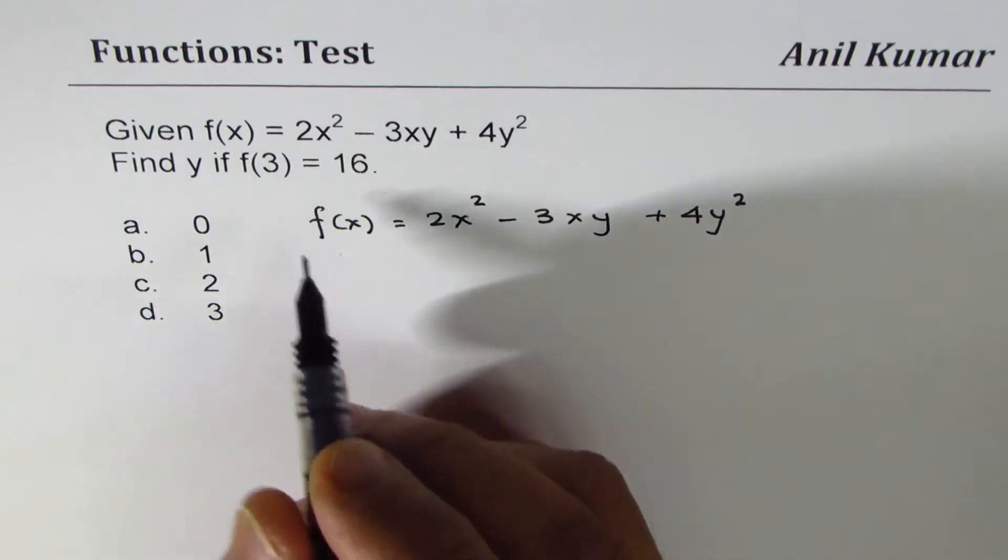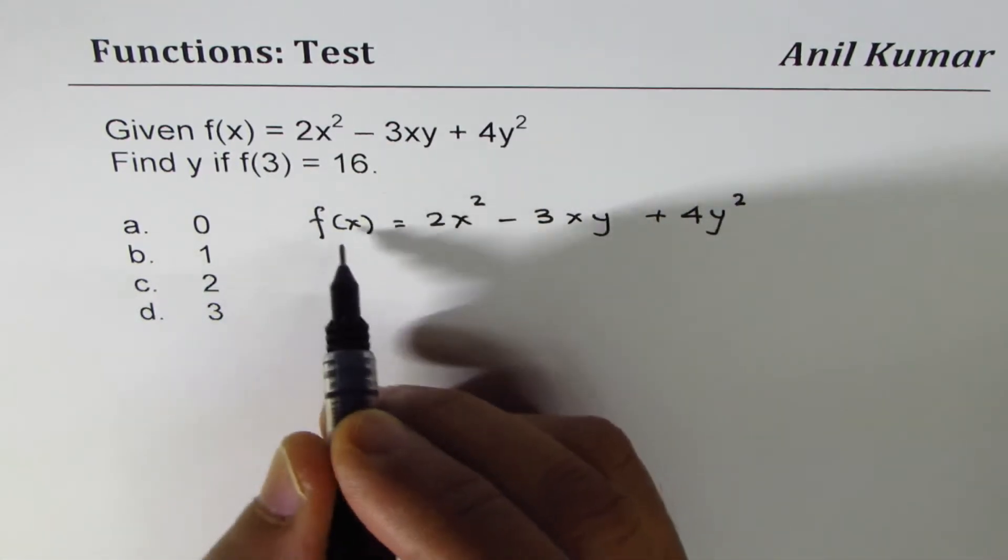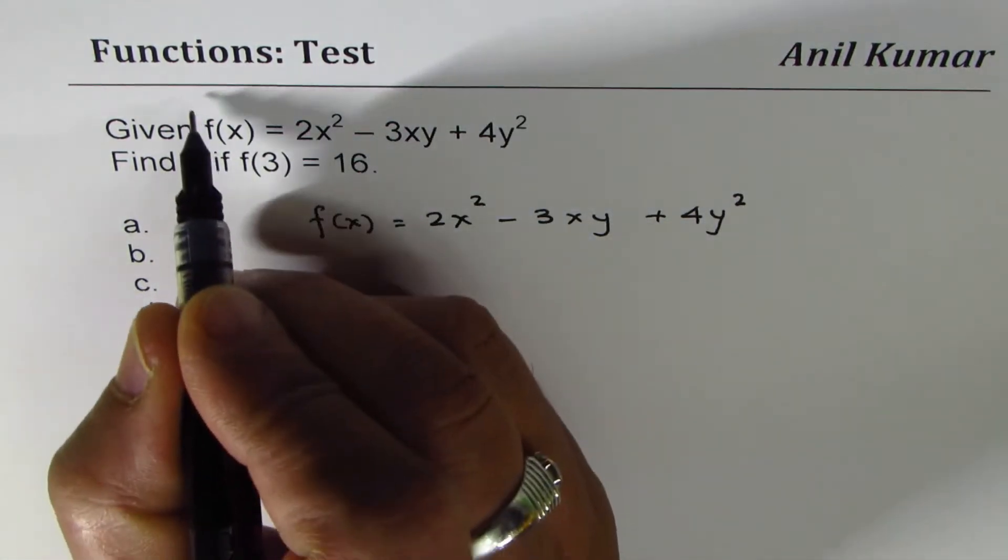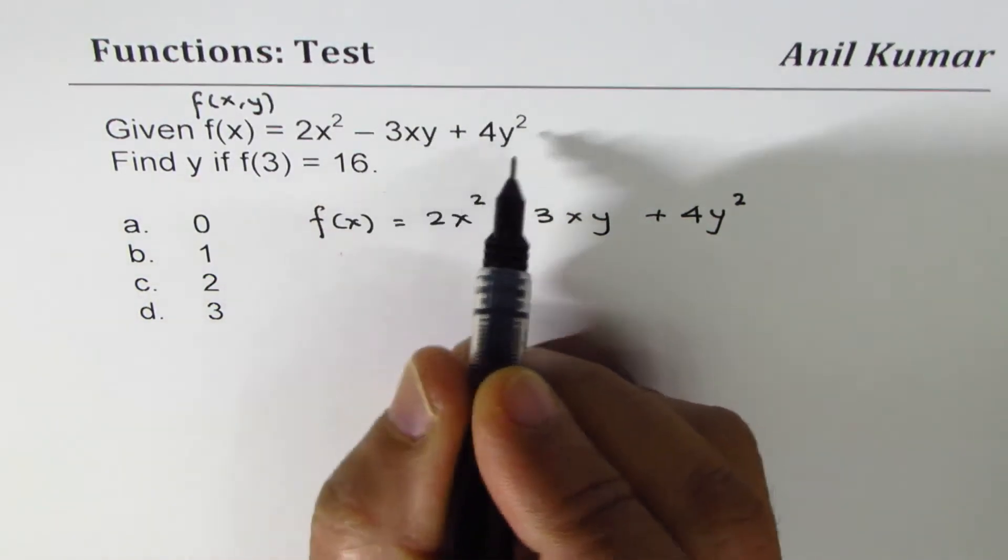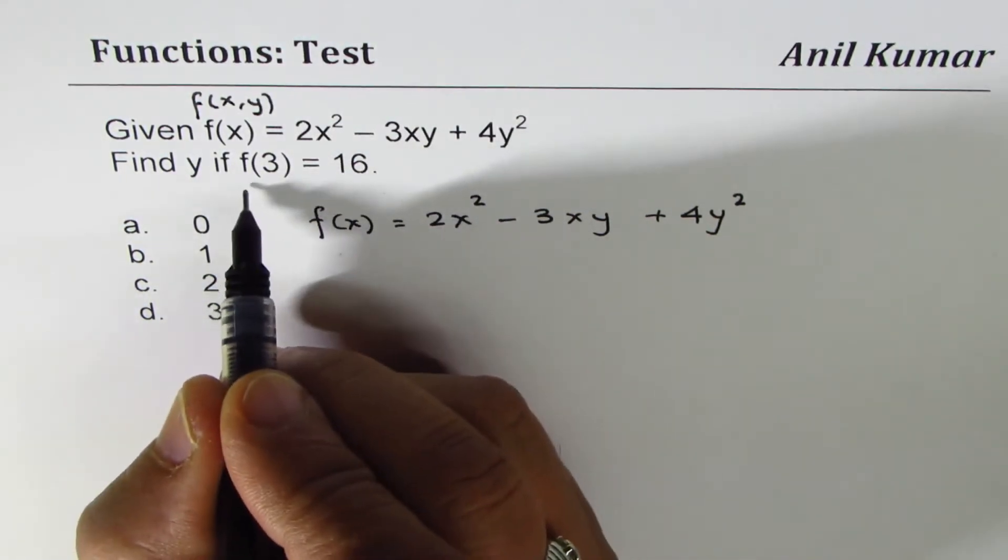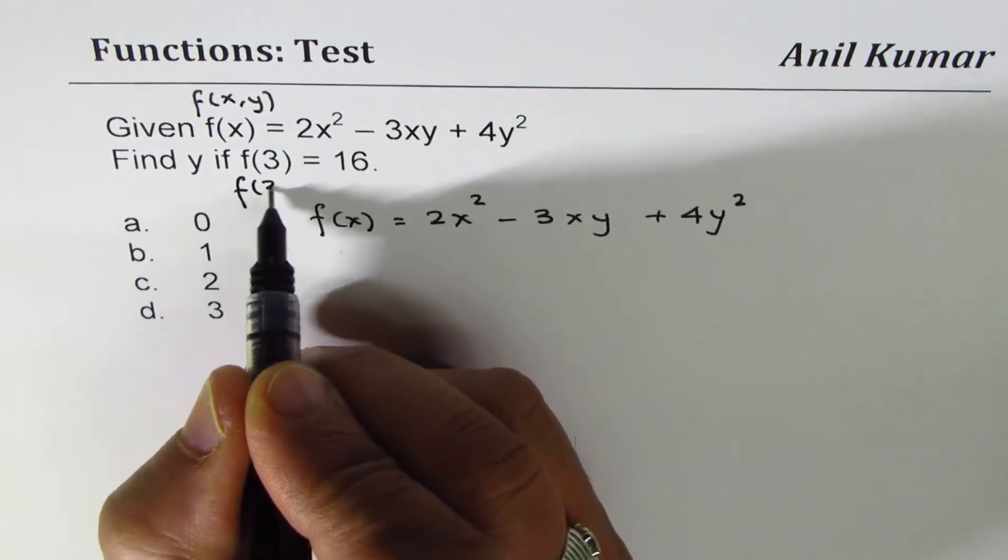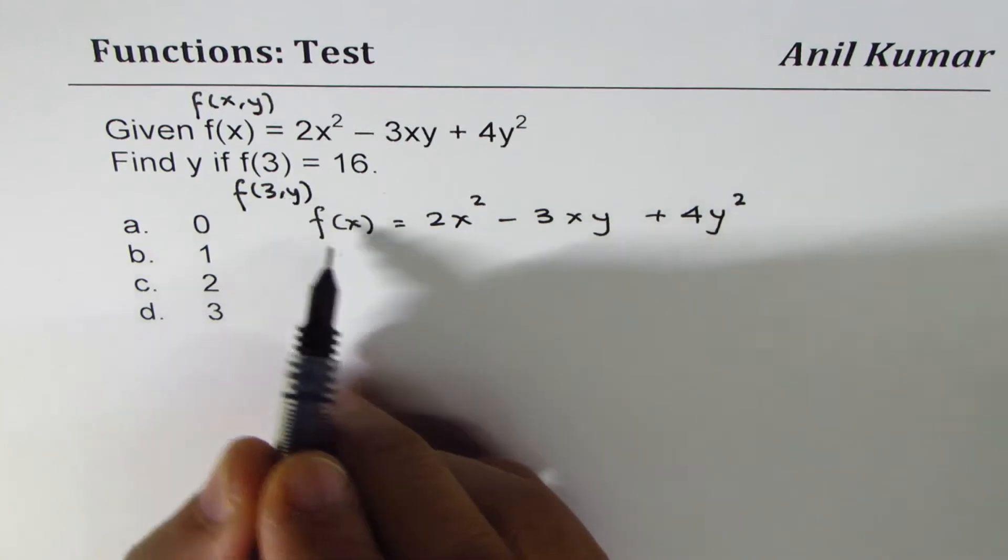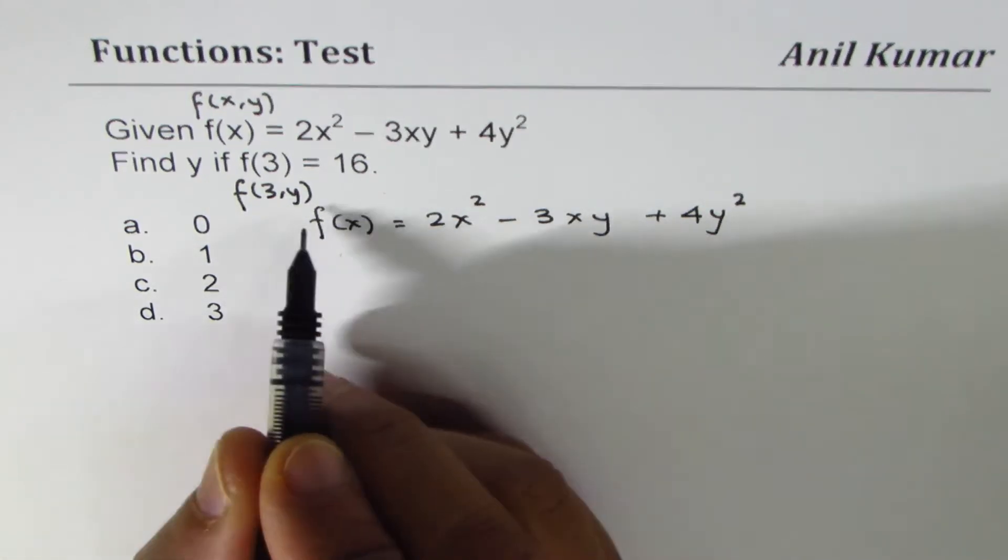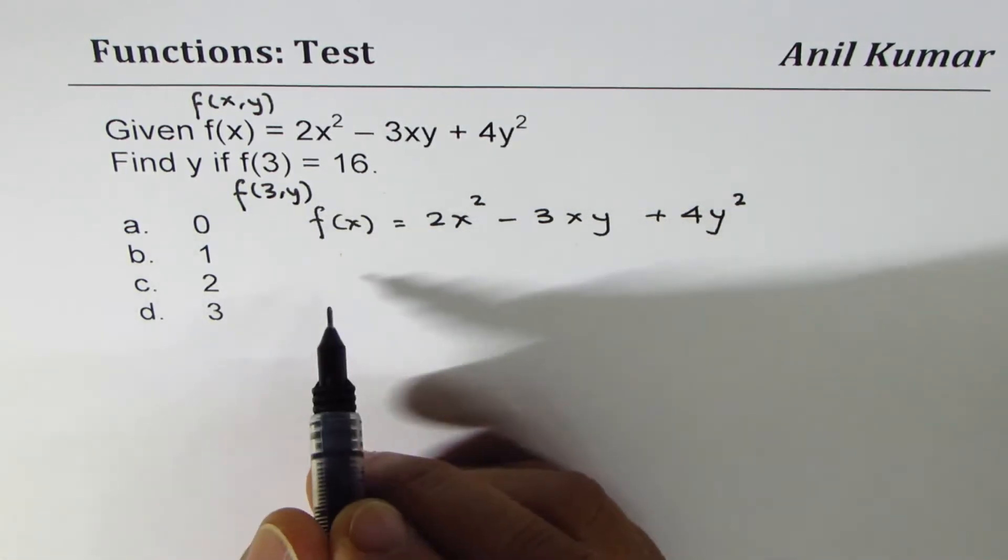So we should have actually written this as f(x,y), right? Since we have both variables x and y here, let me change this to f(3,y). When x is 3, we want to find y - that is what the question is.